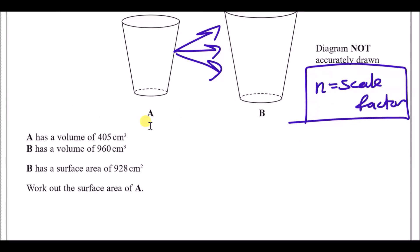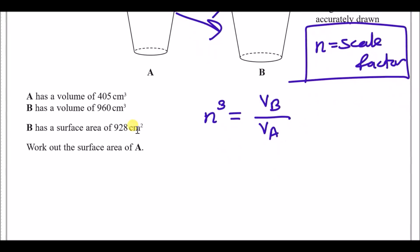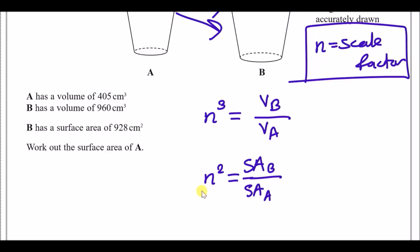Vase A has a volume of 405 and vase B has a volume of 960. For volume, the scale factor relationship is n³ = volume of B / volume of A. For area, n² = surface area of B / surface area of A. We solve the first equation for n, then use it to solve the second.